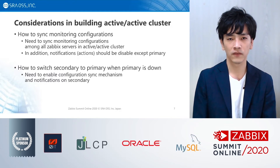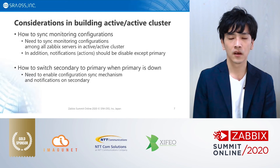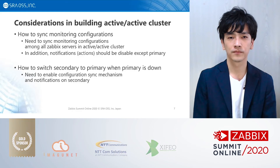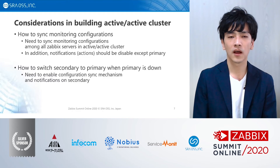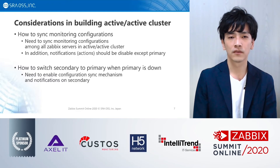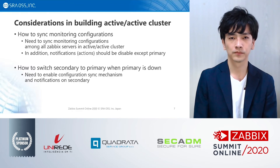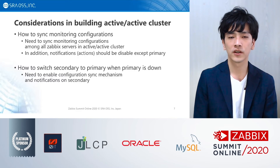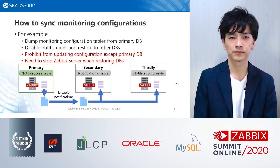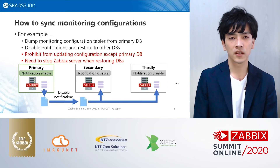There are some considerations in building an Active-Active Cluster. Firstly, how to sync monitoring configurations. An Active-Active Cluster includes multiple individual Zabbix servers, so you should sync monitoring configurations of each server. A way to disable other servers' notifications is needed while synchronizing configurations. One more thing is how to switch a secondary server to a primary server when the primary server goes down. You should prepare methods to enable configuration sync and notifications on the secondary server. You can synchronize configurations manually, but it is better to do it automatically.